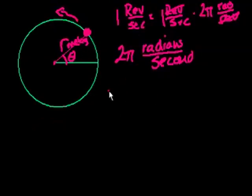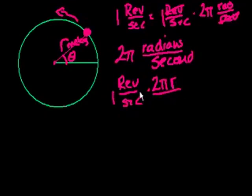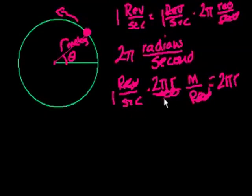So how many meters will I travel in one second? Well, you could do the same thing. 1 revolution per second times 2πr, where r is the radius, meters per revolution. That's just the circumference of the circle. And that equals, the revolutions cancel out, 2πr meters per second. So it's interesting, given the radius and how many revolutions per second, we can now figure out its velocity.